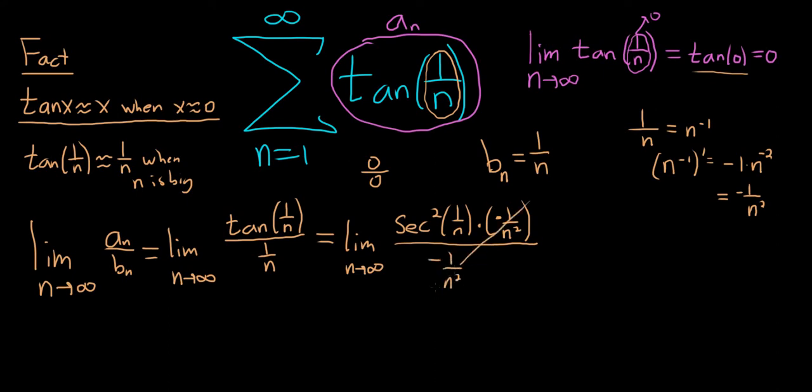Nice and easy. And boom, look at that magic. It cancels. We take the limit. So we get secant squared of 0. Secant is 1 over cosine. And cosine of 0 is 1. So this is just going to be 1, which is finite and positive. So we can use the limit comparison test. So the limit comparison test applies.